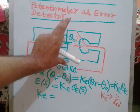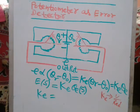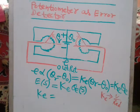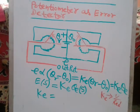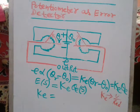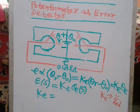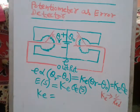This error is detected by the potentiometer error detector and converted into equivalent voltages, which can be measured using a multimeter. To control the position of the shaft, the error must be determined. The potentiometer error detector measures this error and converts it into proportional voltage — it is the angular difference between theta_r and theta_naught, expressed as a voltage.